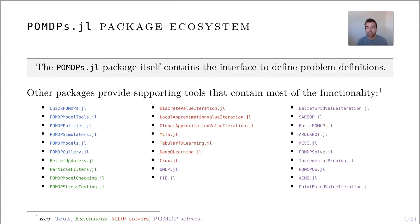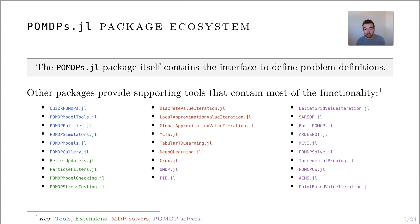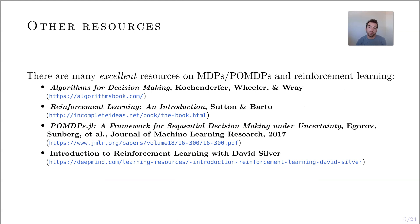The POMDPs.jl package itself simply contains the interface that defines the problem definitions, where most of the core functionality is in a bunch of supporting packages. These range from supported tools like QuickPOMDPs, a concise way to define the problem that I use heavily in these slides, to things built on top of this ecosystem like stress testing tools and model checking tools in POMDPModelChecking and POMDPStressTesting. There are also solvers to find an optimal or approximately optimal policy for MDPs and POMDPs. By no means is this course exhaustive — it's primarily focused on the Julia code available to you and how to set up your own problems within this decision making under uncertainty framework.